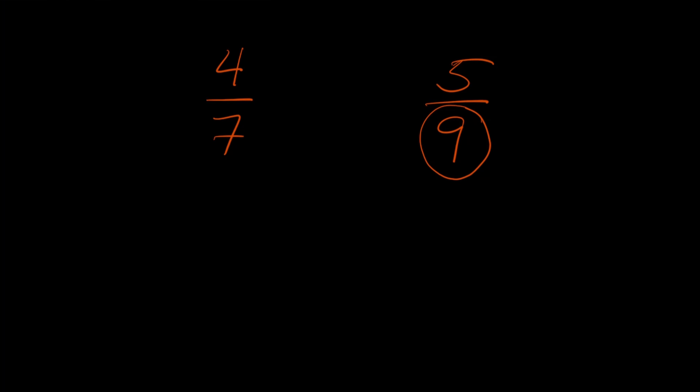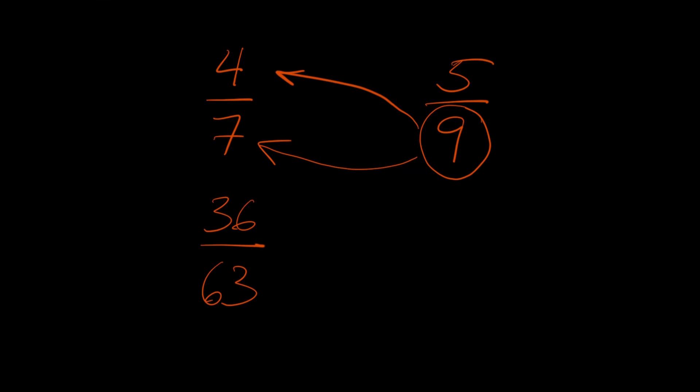We can do it with one more pair of fractions — something maybe a little bit more difficult. Let's say we're comparing four sevenths to five ninths. We're going to do the exact same thing. Focus on the left fraction, four sevenths, and take the denominator of the other fraction — nine — and multiply it times both the numerator and the denominator. Nine times four is 36, and nine times seven is 63.